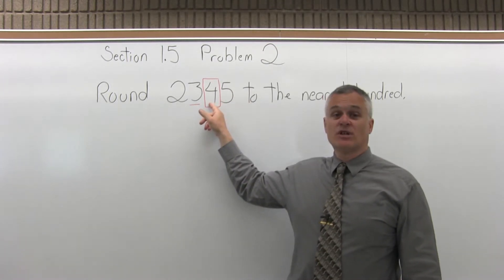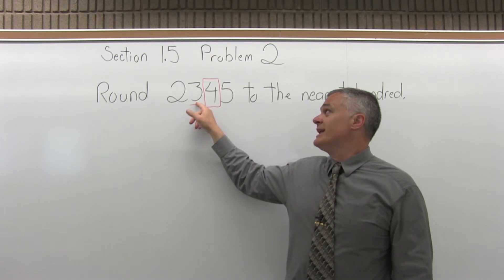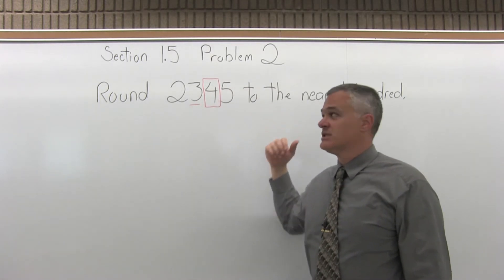If it's five, six, seven, eight, or nine, you bump the rounding digit up to the next highest number and then everything after it turns into a zero.